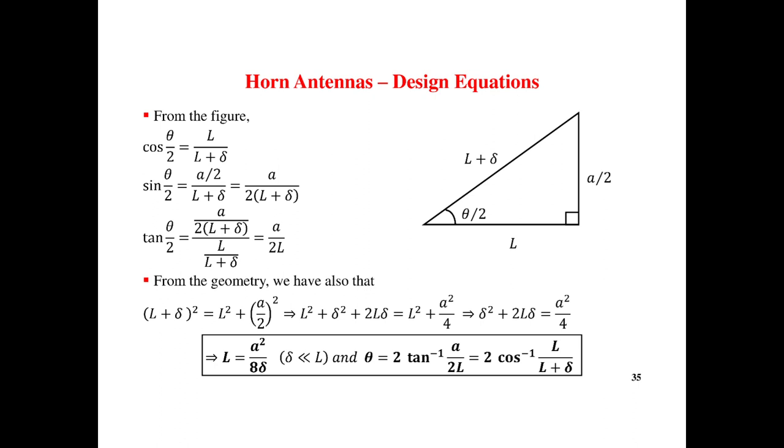Horn antenna: cos theta by 2 equals L by L plus delta. Sin theta by 2 equals A by 2 into L plus delta. Tan theta by 2 equals A by 2L. From the geometry, we have also that L equals A squared by 8 delta and theta equals 2 tan inverse A by 2L equals 2 cos inverse L by L plus delta.